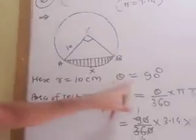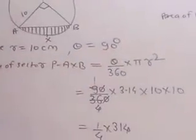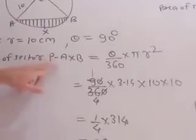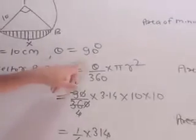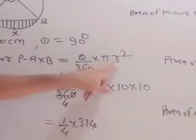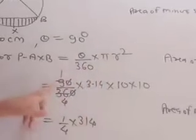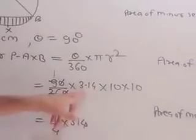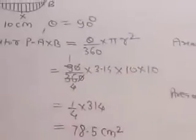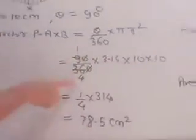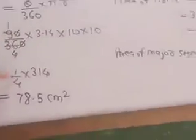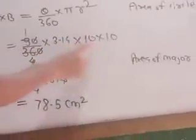So here R equal to 10 cm, theta equal to 90 degree. Area of sector AXB equal to theta upon 360 into pi R square. 90 upon 360 into 3.14 into 10 into 10. So 90 and 360 cancel, 1 by 4. So 3.14 into 10 into 10.